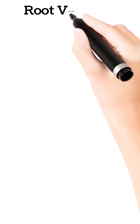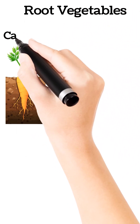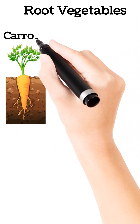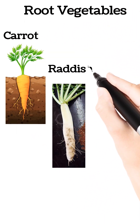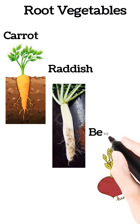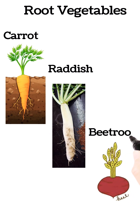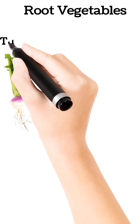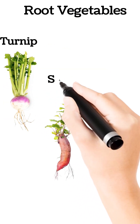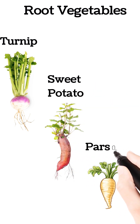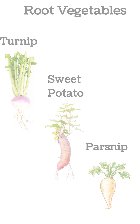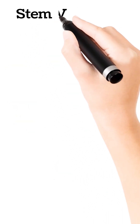Root vegetables. Roots that we eat are carrot, radish, beetroot, turnip, sweet potato, parsnip. All these are roots that we eat.